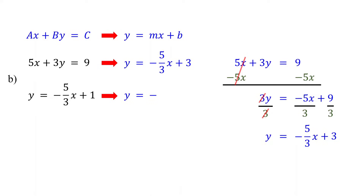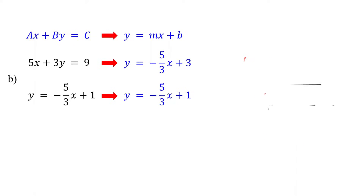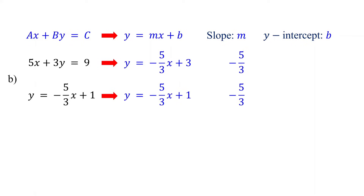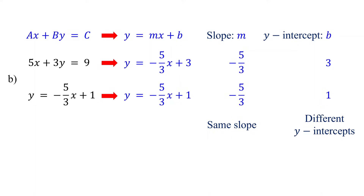The second equation is already in slope-intercept form. Next, identify their slopes and y-intercepts. In both equations, the slope is negative 5 thirds, but the y-intercepts are 3 and 1. So what does it mean when two lines have the same slope but different y-intercepts? That's right, they are parallel. Therefore, these lines are parallel.